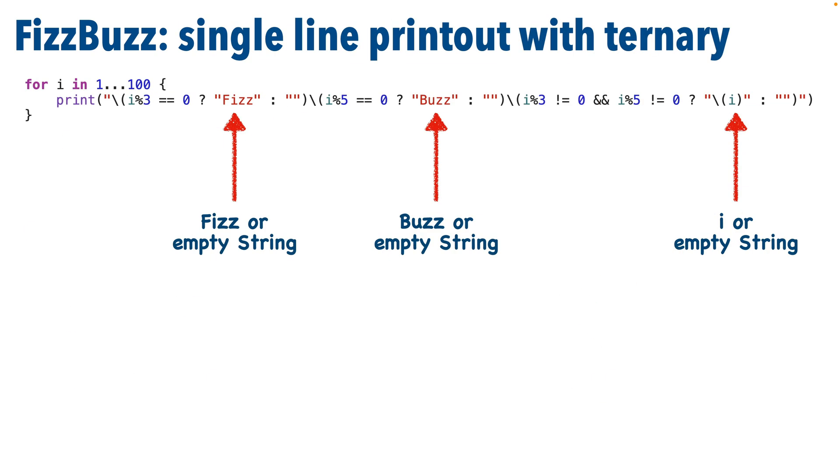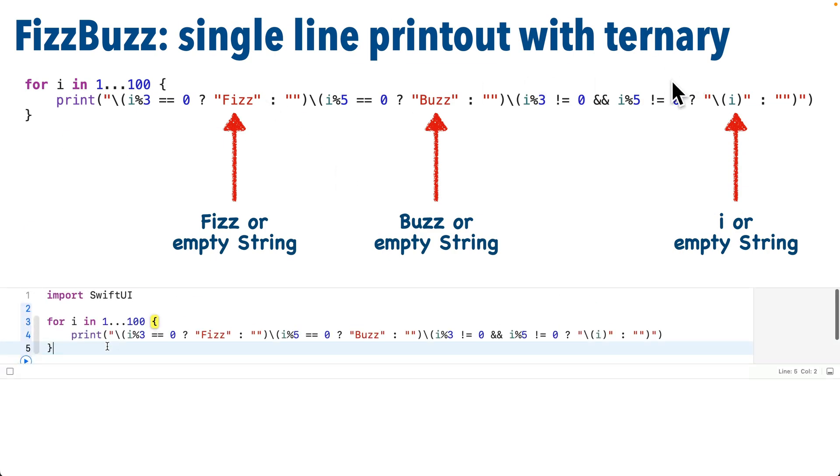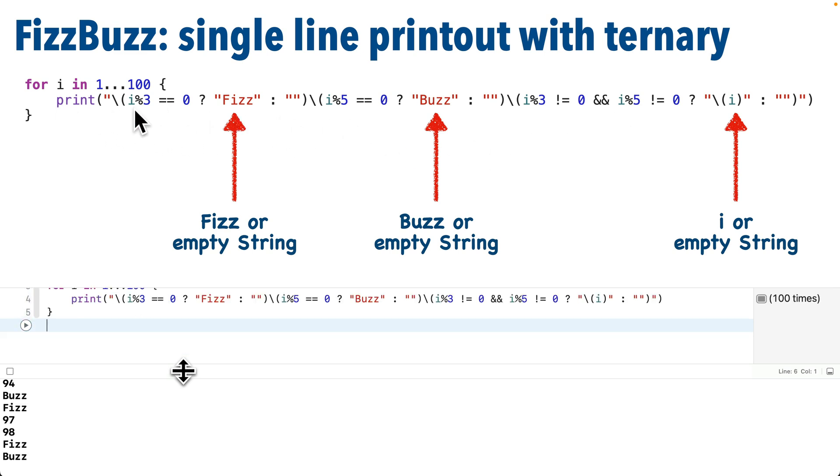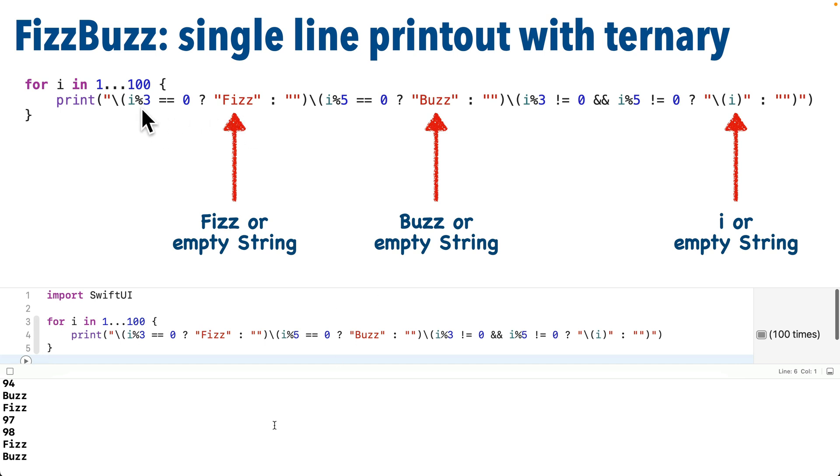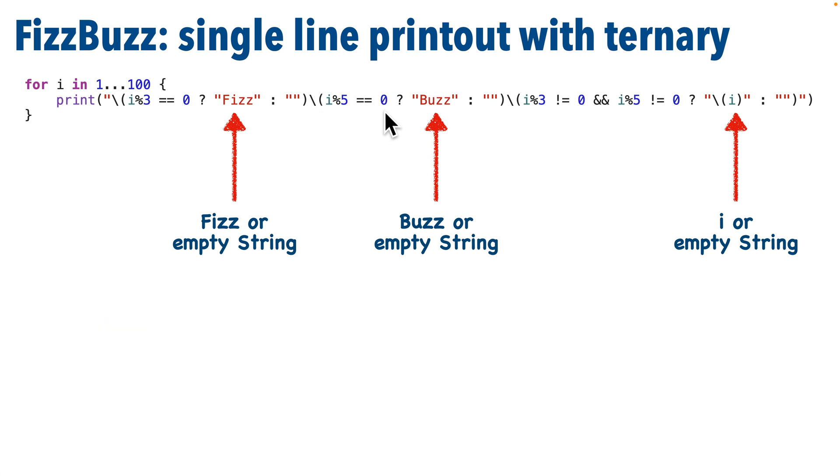Now we're definitely getting tougher to read here, but this is just a single line of code logic inside of our for loop. So this first string interpolation here prints either Fizz if 3 divides evenly by i. Otherwise we print the empty string, which is really printing nothing. And then the second string interpolation here will print either Buzz if 5 divides evenly by i. Otherwise we print the empty string.